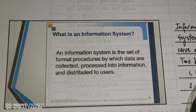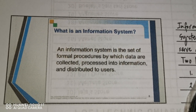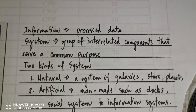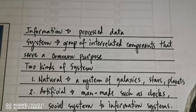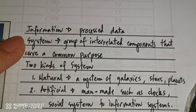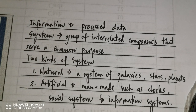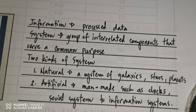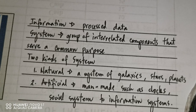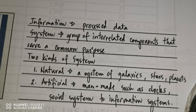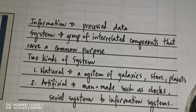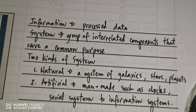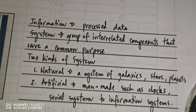What is an information system? First, information is processed data. A system is a group of interrelated components that serve a common purpose. There are two kinds of systems: natural and artificial. Natural systems, like the system of galaxies, stars, and planets, are not created by man — they are created by God. Artificial systems are man-made, such as clocks, social systems, and information systems. So an information system is an artificial system.